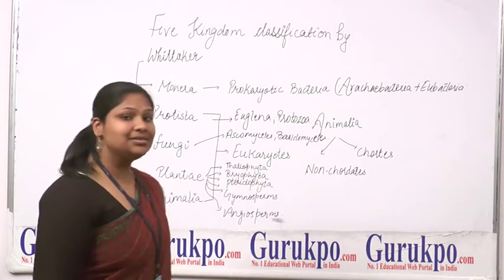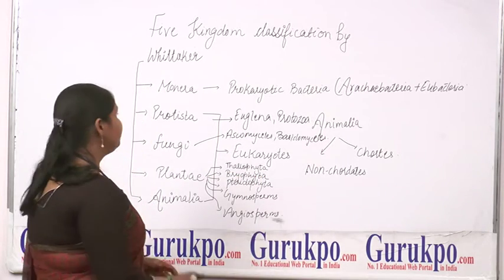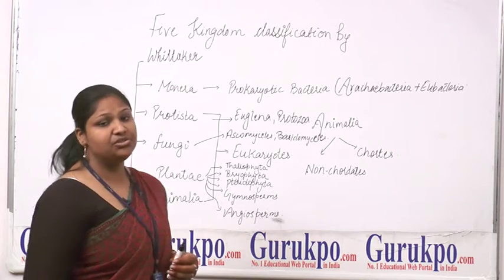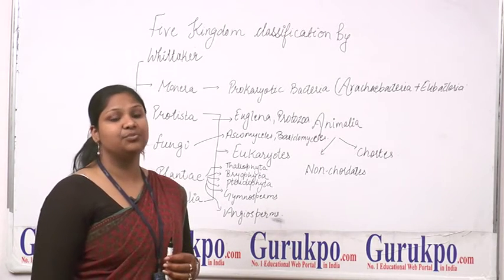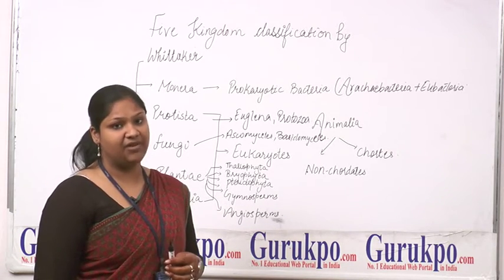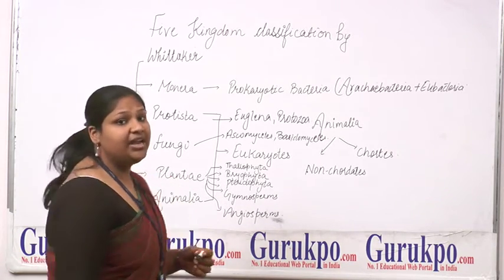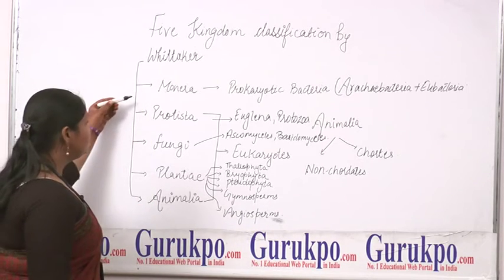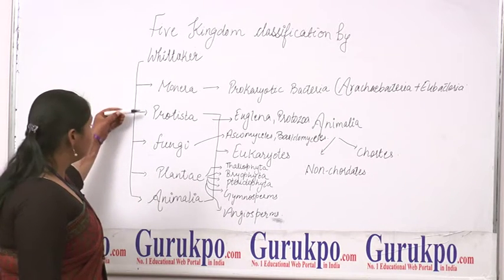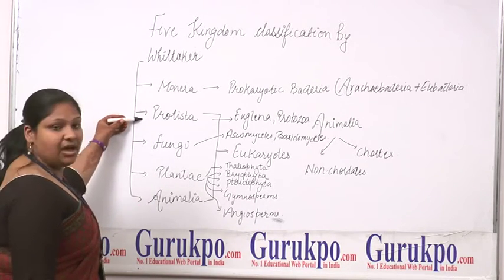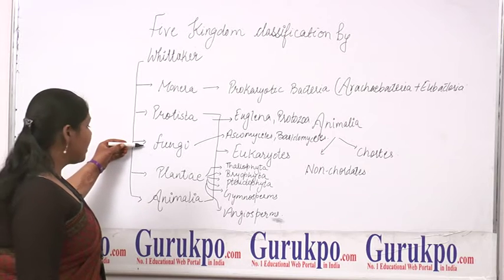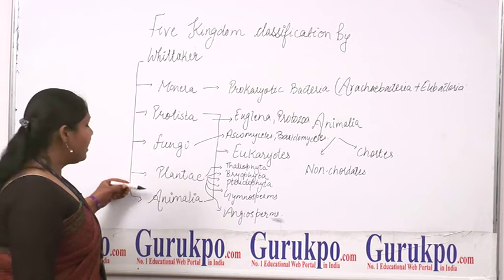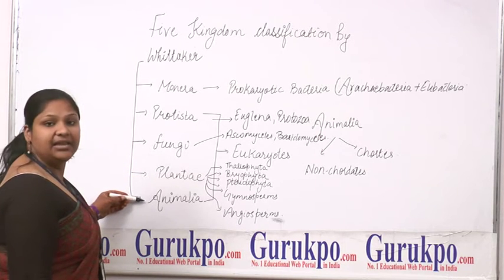Whittaker is a scientist who has classified the various types of animals or organisms present in the environment into Five Kingdoms: Monera, Protista, Fungi, Plantae, and Animalia.